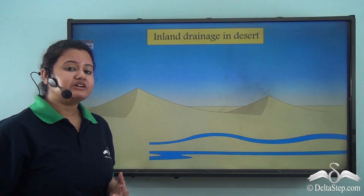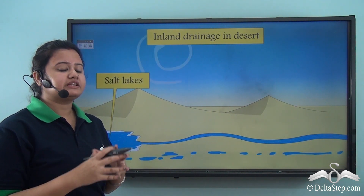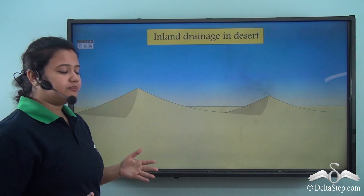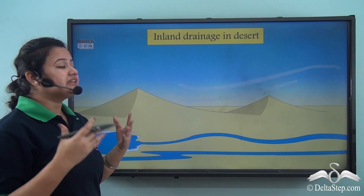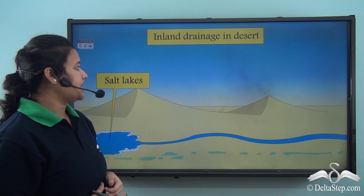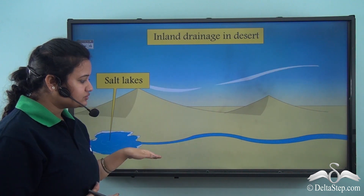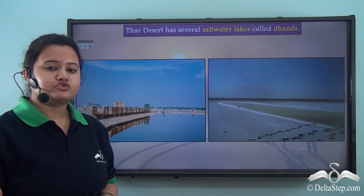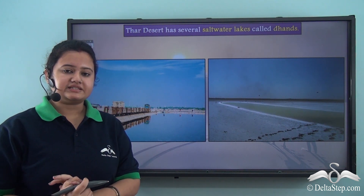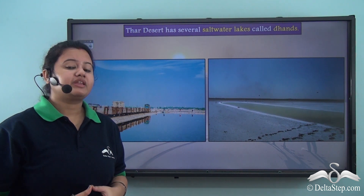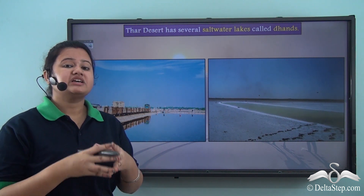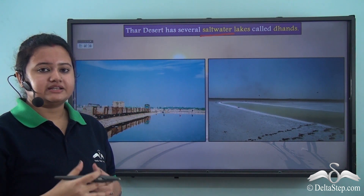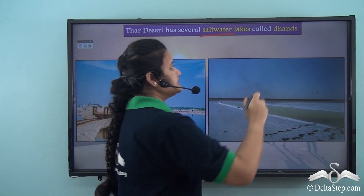Rivers and streams are seldom found in Thar Desert. These rivers and streams drain into salt lakes or sometimes disappear into the sand. Thus Thar Desert is a region of inland drainage, as the streams or rivers disappear into the sand or flow into salt lakes. The rivers or streams mostly appear during the rainy season and disappear after that. The rivers and streams drain into several saline lakes present in Thar Desert, and these salt water lakes are known as Dhands.